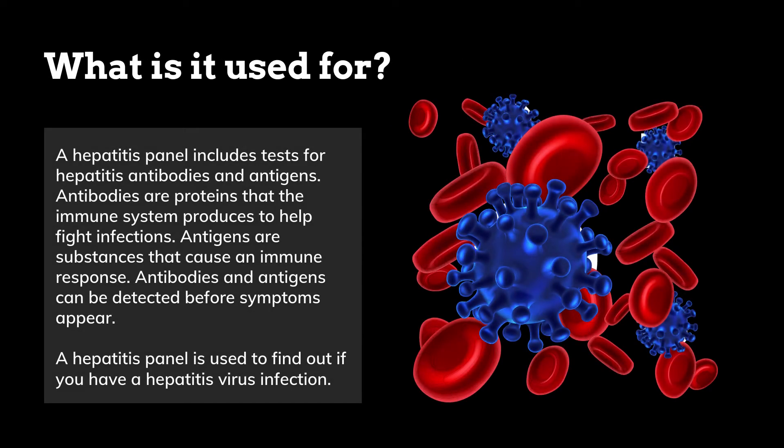What is it used for? A Hepatitis Panel includes tests for hepatitis antibodies and antigens. Antibodies are proteins that the immune system produces to help fight infections. Antigens are substances that cause an immune response. Antibodies and antigens can be detected before symptoms appear. A Hepatitis Panel is used to find out if you have a Hepatitis Virus Infection.